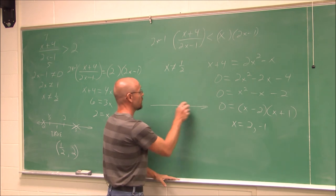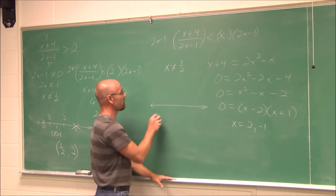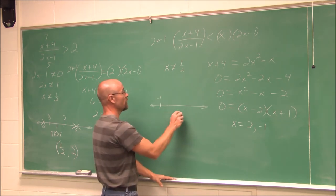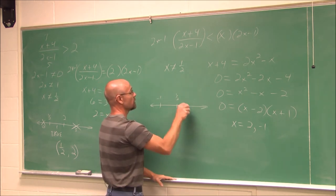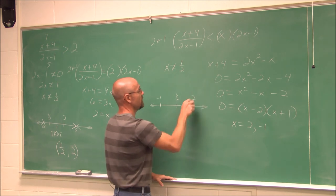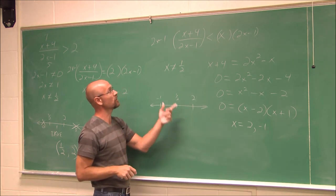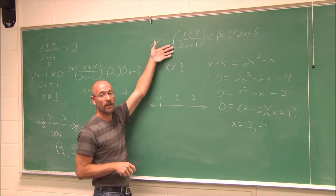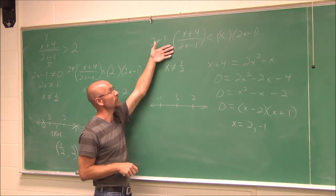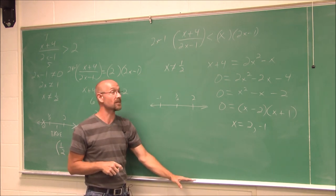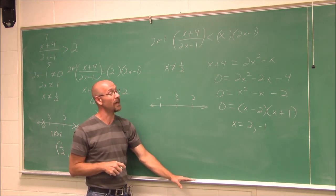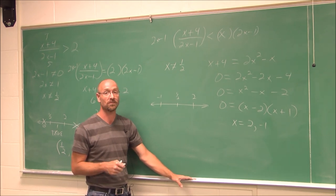So we have critical points of 1/2 from the restriction, and 2 and negative 1 from factoring. At this point, I'm going to leave it for you to test these intervals and find the solutions to this inequality. This has been section 7.6, Rational and Quadratic Inequalities. Thank you for watching.